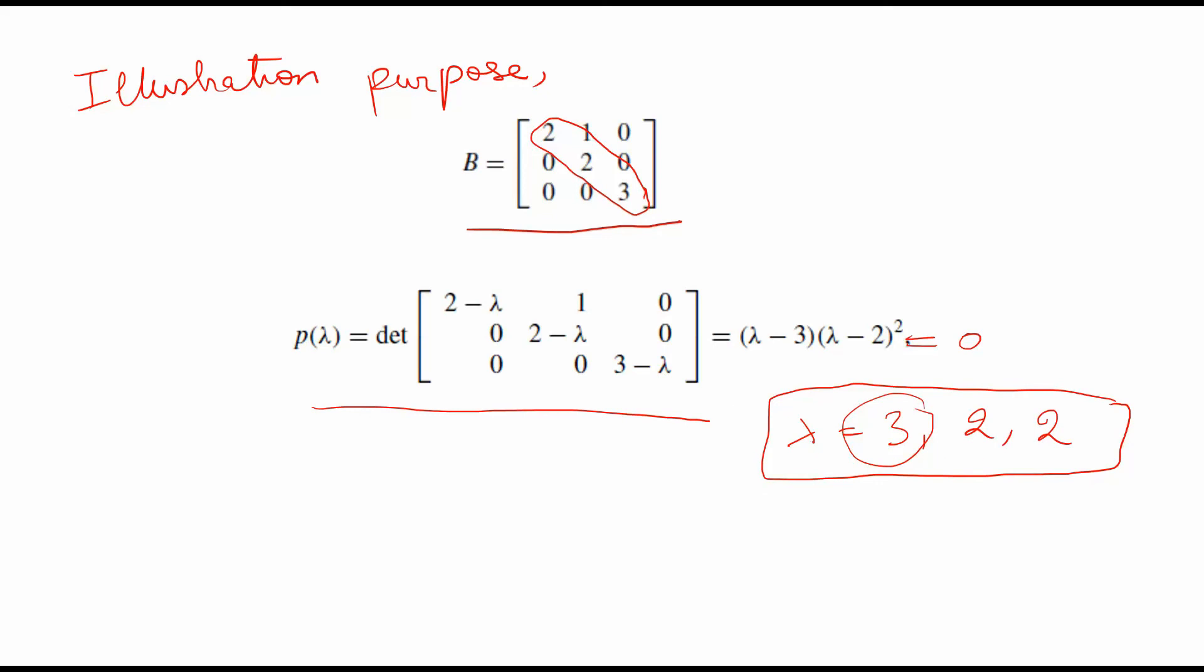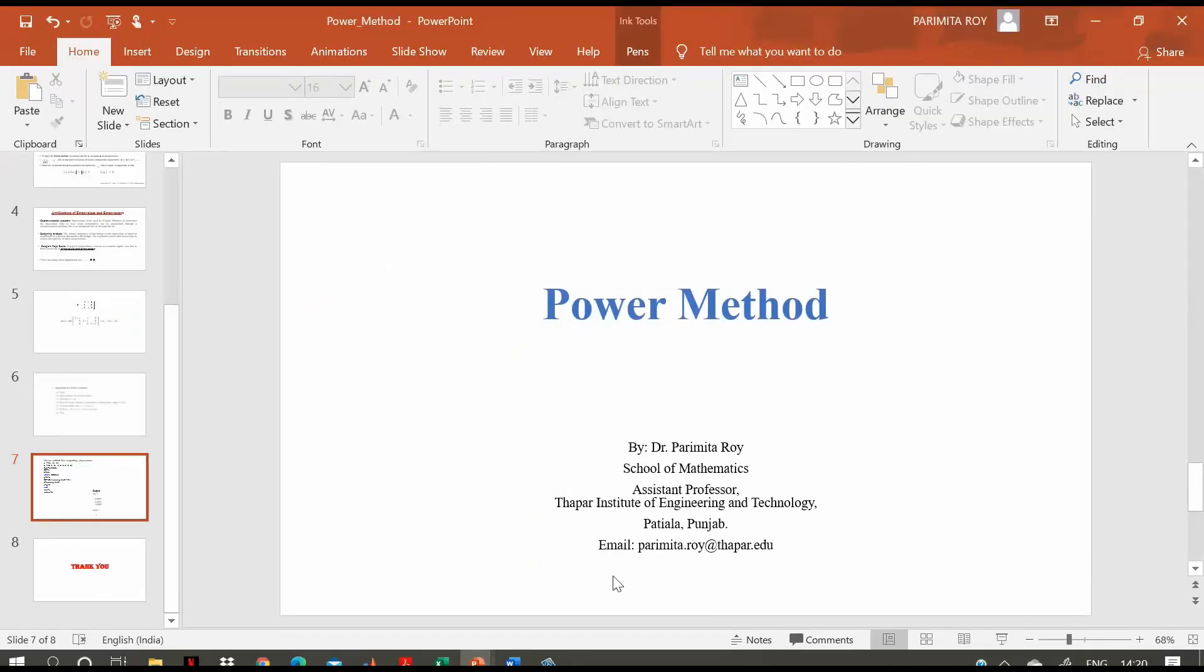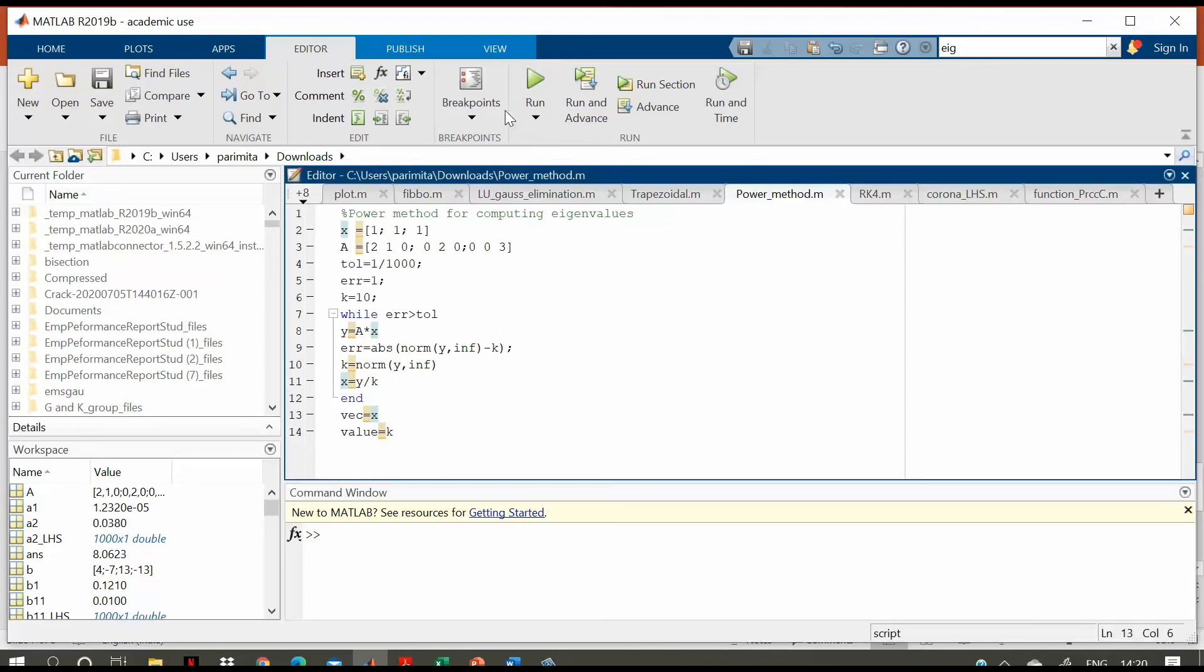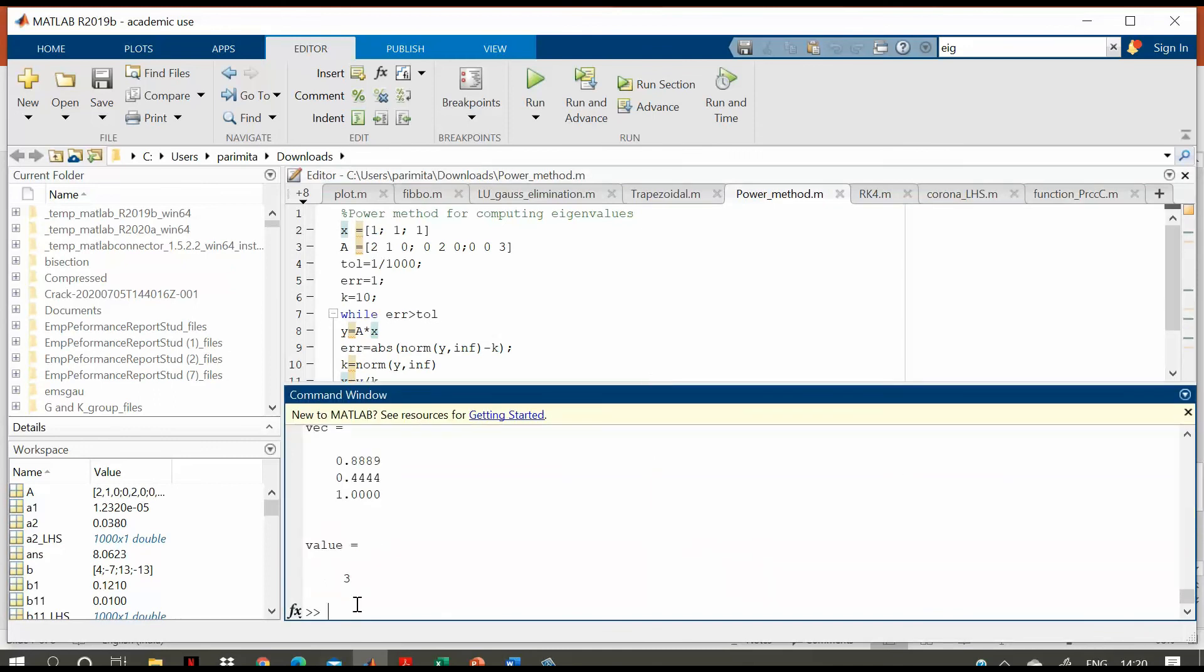Let us quickly see, I will copy and paste this code in MATLAB and then we will quickly see the output also in our MATLAB. I have copied and pasted the code in MATLAB and I am going to run this by pressing the run button in the editor. And then when I press this run button, you can see I get the output over here - this value is 3 which is the largest eigenvalue and this is the corresponding eigenvector.